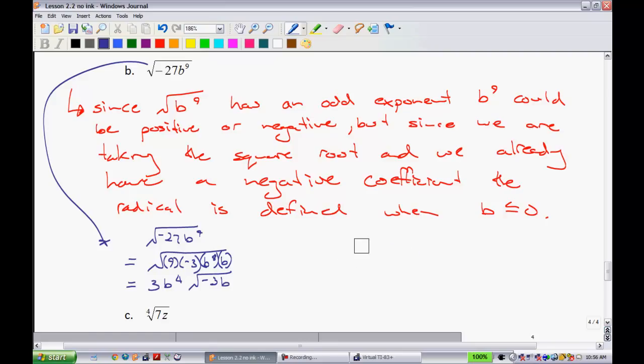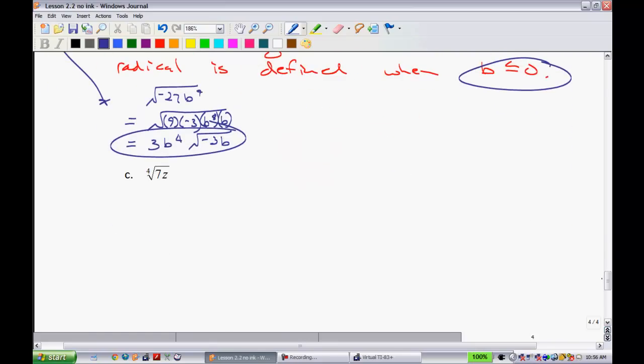And that simplifies to have a negative 3b inside. So that would be simplified completely. And that would be your restriction. Two more. Next one, we have the 4th root of 7z.